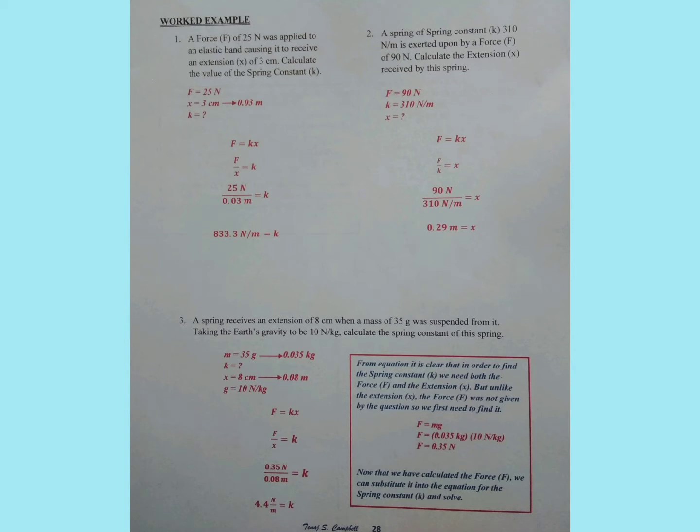Next, we look at the units and see what needs to be converted. We realize that the extension X is in centimeters. Any length, distance, height, or depth cannot be represented in centimeters in order for us to put that into equations. So, we will convert the 3 centimeters to meters. Dividing by 100, it gives us 0.03 meters.